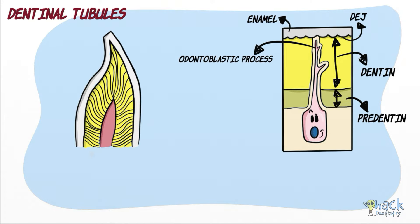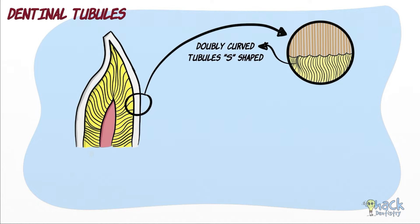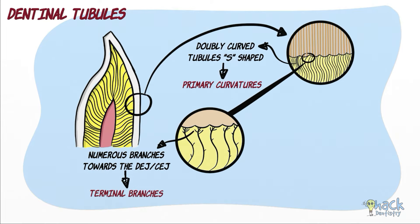The odontoblastic processes are housed in canaliculi called dentinal tubules. These dentinal tubules traverse the entire thickness of the dentine, extending from the inner dentine to the dentino-enamel junction coronally and the cementum-dentine junction in the root portion of the tooth. A dentinal tubule is doubly curved and follows an S-shaped or sigmoid course; these curves are called primary curvatures. Dentinal tubules show numerous terminal branches towards the dentino-enamel junction and the cementum-dentine junction, called terminal branches. Tubules also show lateral branches along their length.